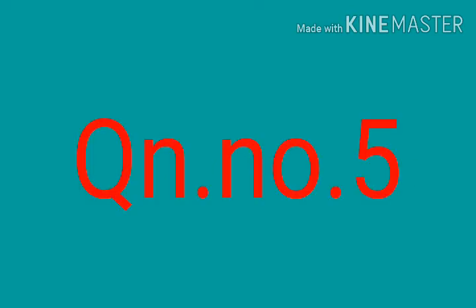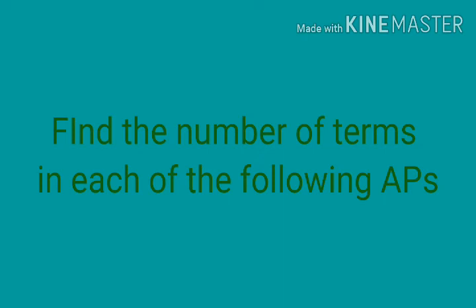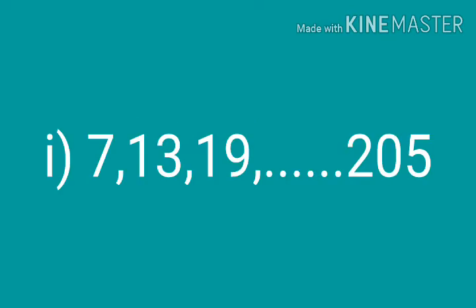Now the fifth question. Find the number of terms in each of the following APs. Number of terms also means N — value of N we need to find. First question: 7, 13, 19, etc. up to 205.